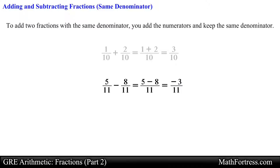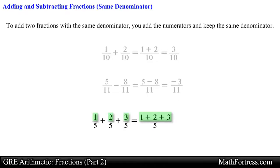This method would also work if you are adding more than two fractions. For example, we can add the following fractions with the same denominator: one fifth plus two fifths plus three fifths is going to be equal to the sum of each of the fractions' numerators over five. Simplifying the numerator results in the final answer equal to six fifths.